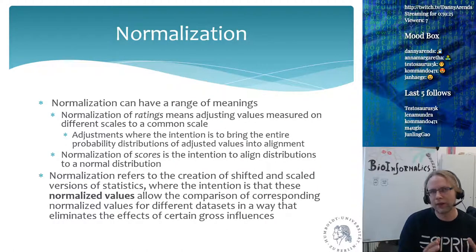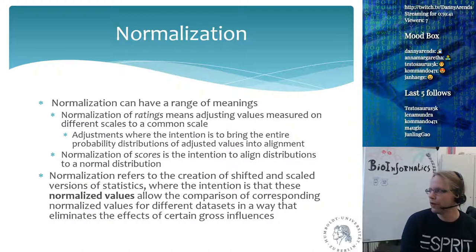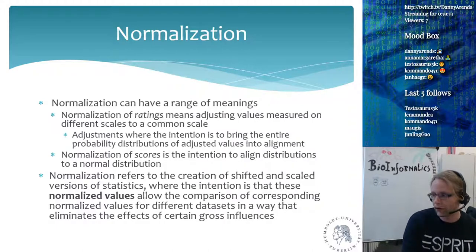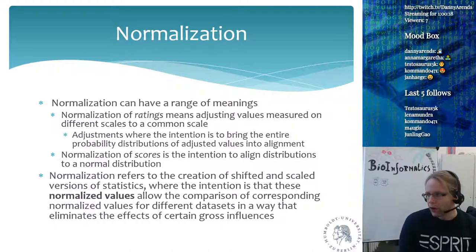Normalization has two different types. The first is normalization of ratings, which means adjusting values measured on different scales to a common scale. For example, in microarrays, if one array has more DNA on it than another, the entire intensity of that array will be higher. You would normalize to bring the two distributions in line by subtracting a constant from the values to bring the array back to the same scale level.